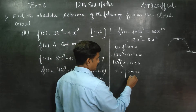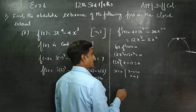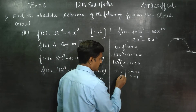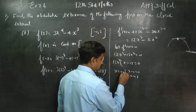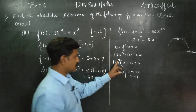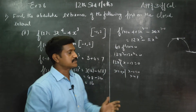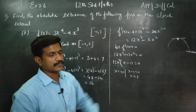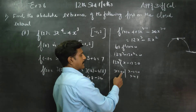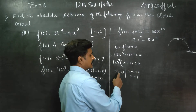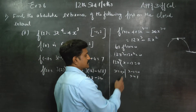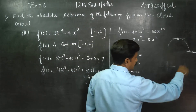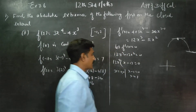Factoring 12x³ minus 12x² equals 0 gives 12x²(x minus 1) equals 0. So x equals 0 or x equals 1. These are the critical points inside the interval [-1, 2].